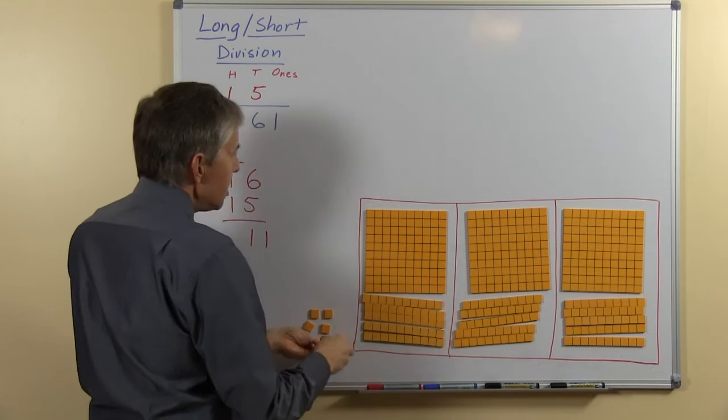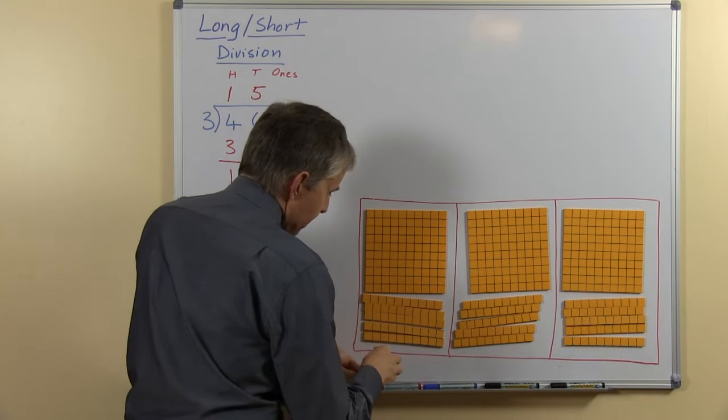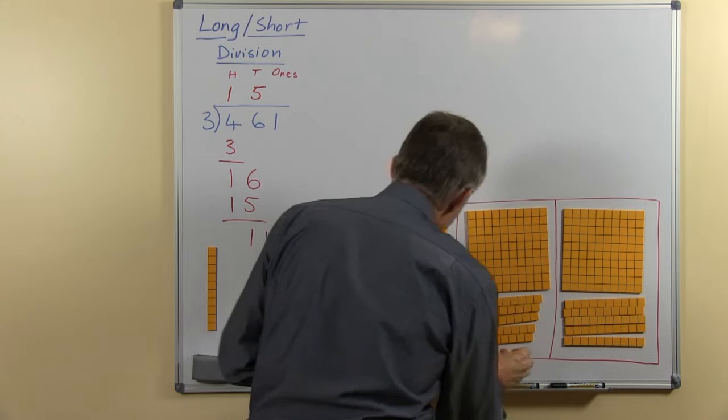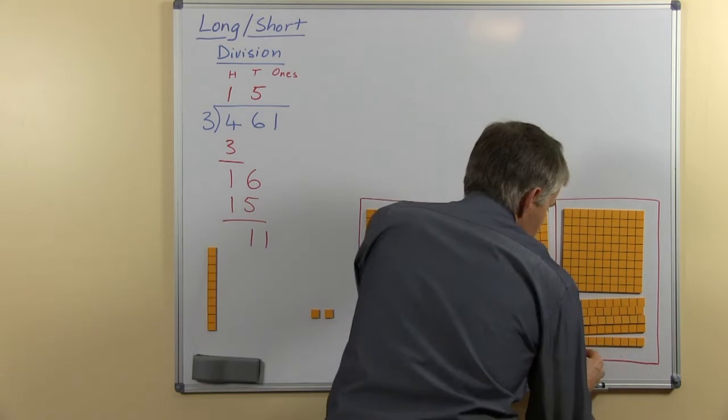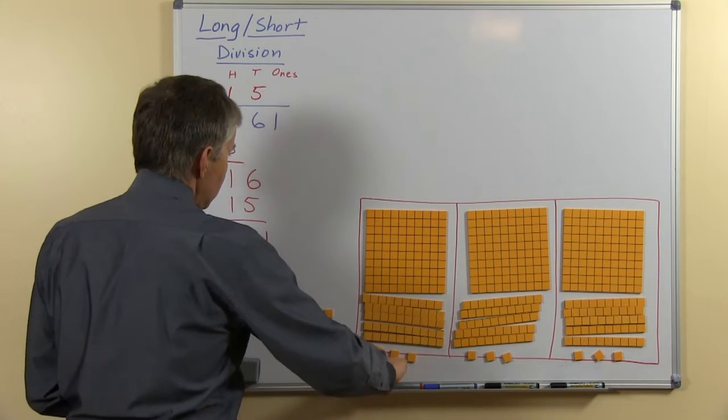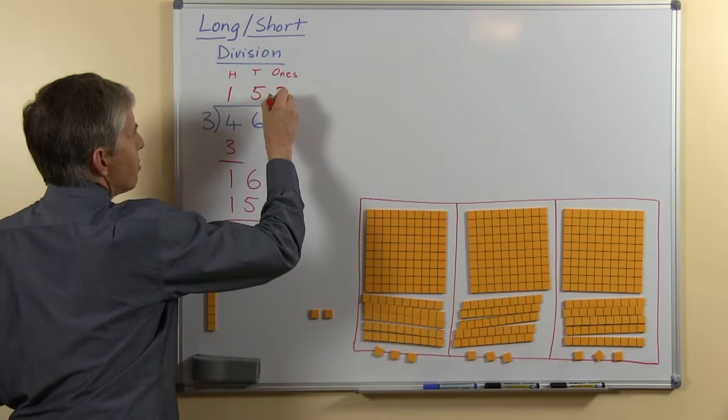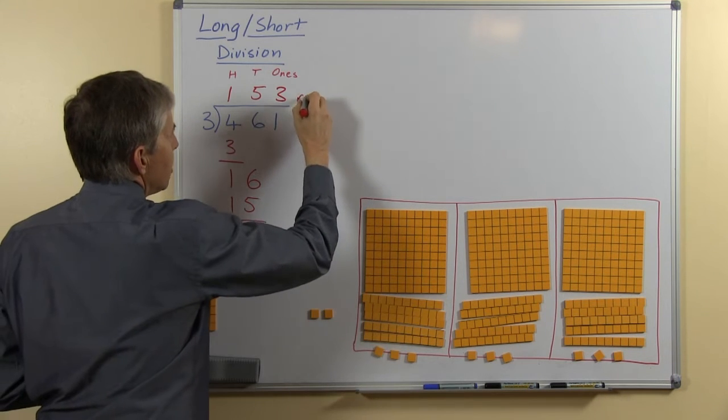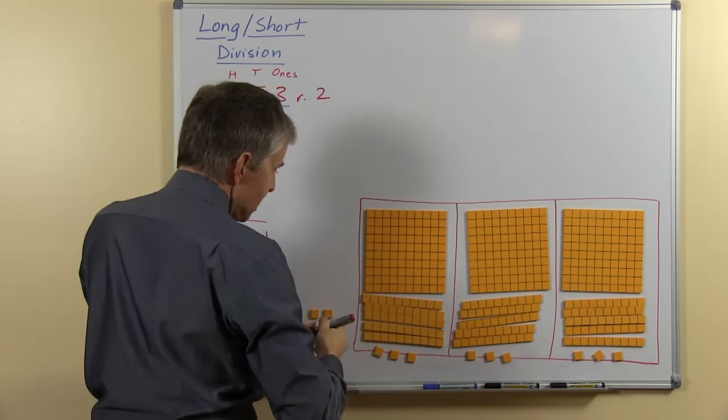That's what I've got here, share 11 ones among 3, how many will each person receive? Well the answer must be 3 because 3 threes are 9 and that will leave us with 2 left. So everybody gets 3, 3 threes are 9 and we have 2 left over, and that's what we call the remainder.